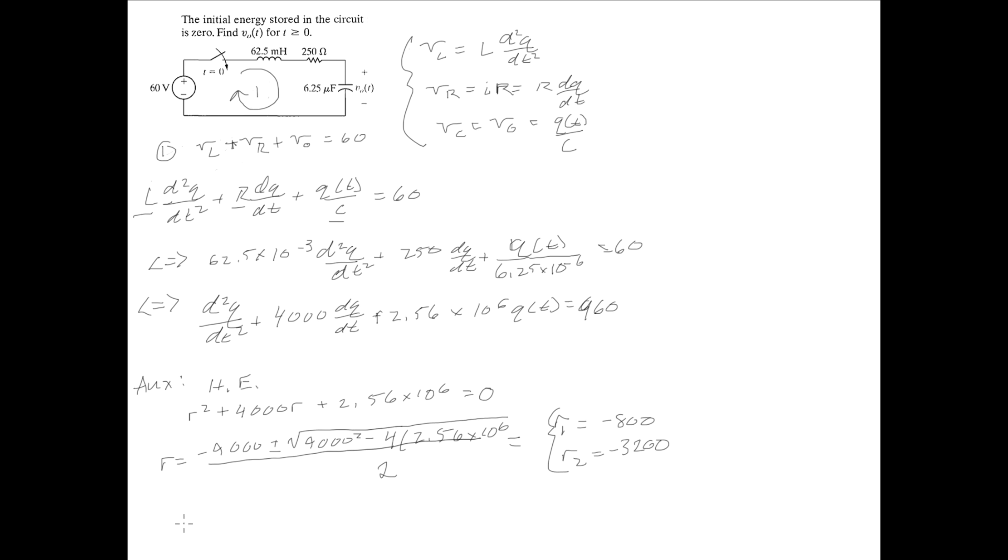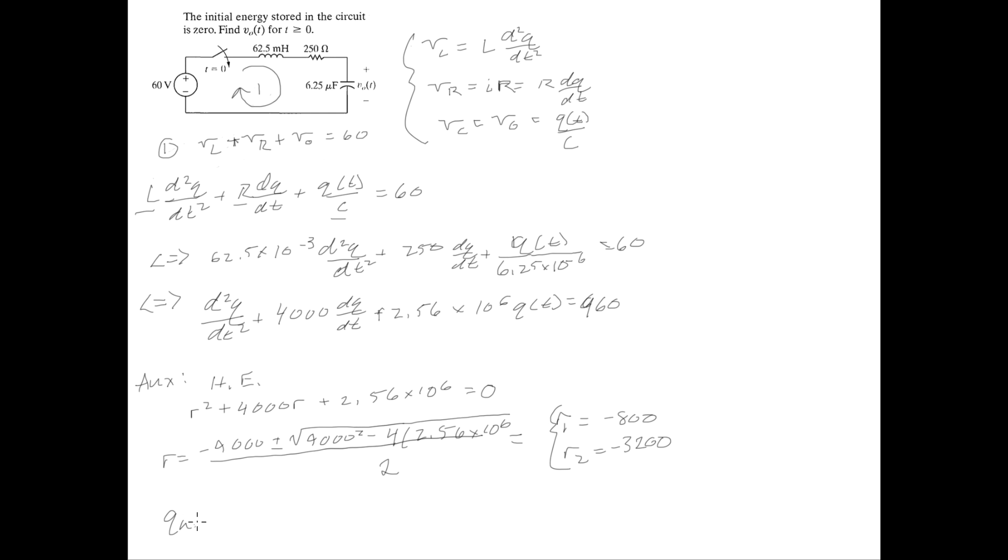Just using the general formula that you learn in differential equations, Q homogeneous, we'll call it, of T is equal to some constant C1 e^(r1*T) plus C2, a different constant, times e^(r2*T).